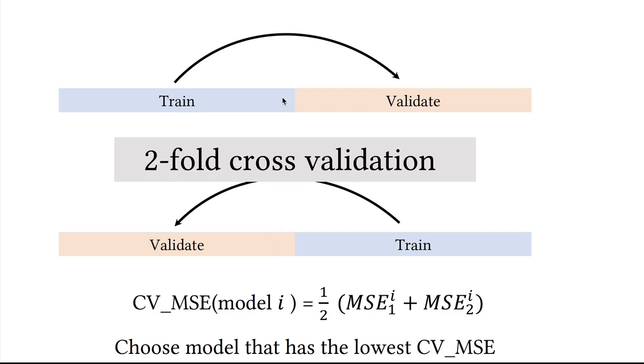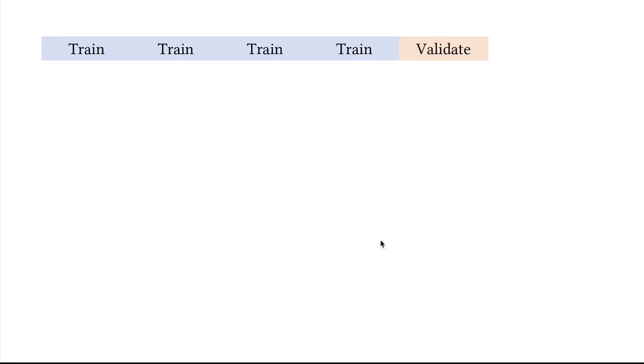This is an example of a two-fold cross-validation, because we have split our data into two folds. We could also split our data into five folds. Four of them would be training, would constitute one training set, and on the fifth portion of the data we validate.